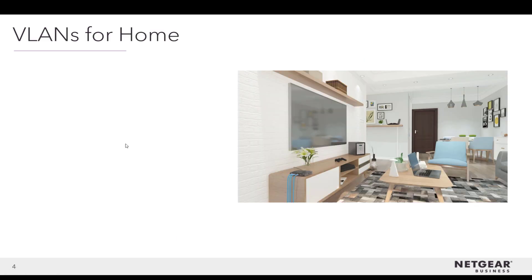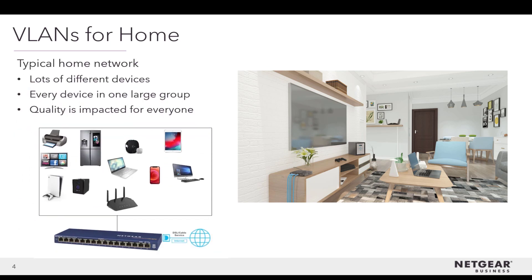Let's look at a VLAN example for the home. Here's a typical home network with lots of different devices, all in one large group. If one house member is streaming a movie from the internet, another is playing an online video game, and a work-from-home employee is in a video meeting in the bedroom, all devices are accessing the internet at the same time, so quality is impacted for everyone and the video meeting may become disconnected.